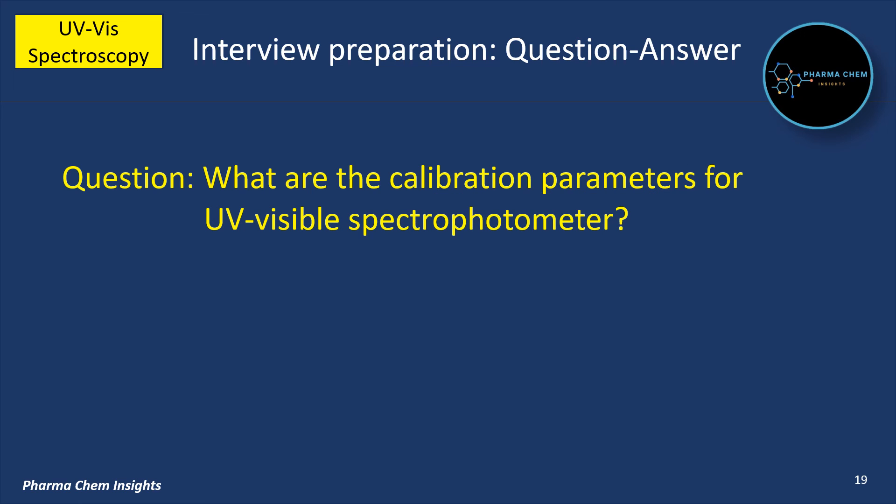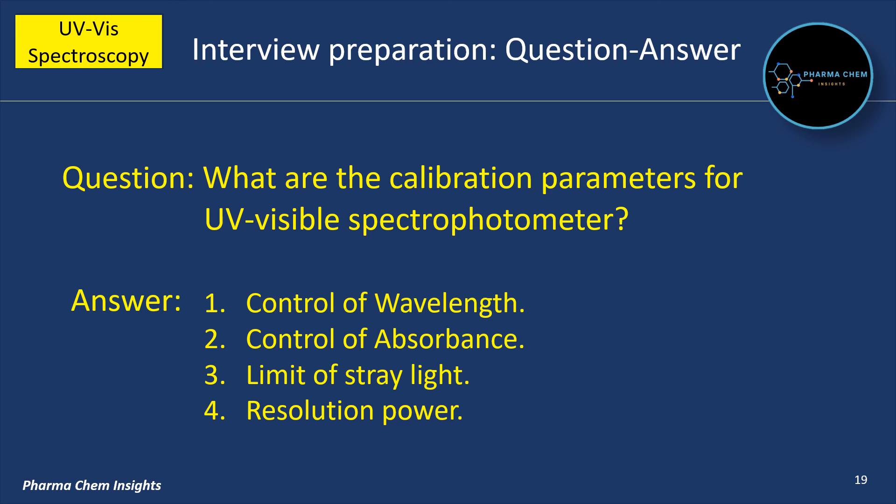What are the calibration parameters for UV visible spectrophotometer? The parameters are: control of wavelength, control of absorbance, limit of stray light, and resolution power.